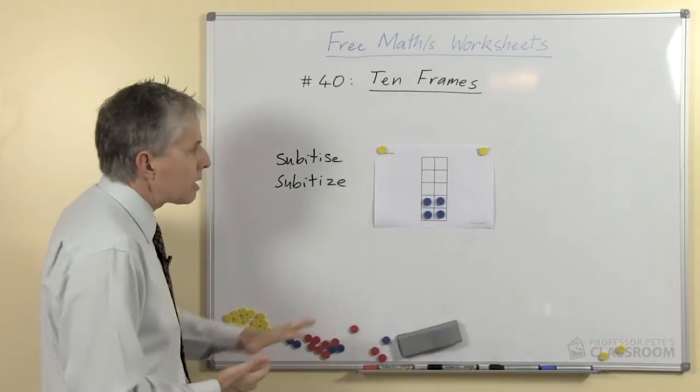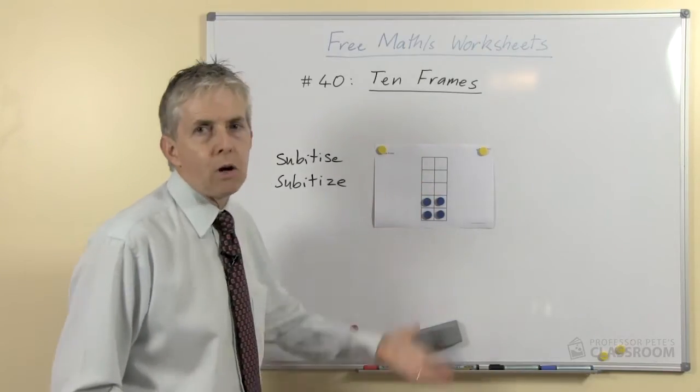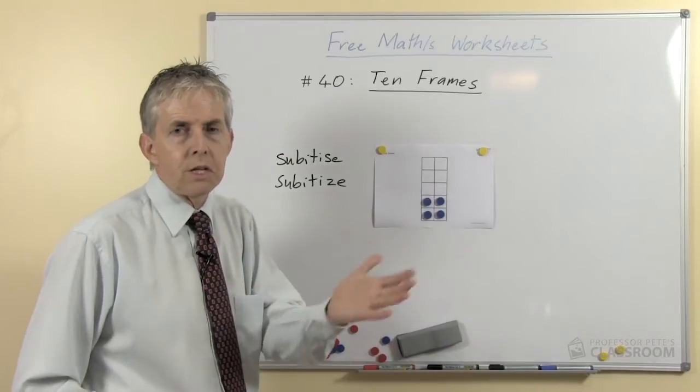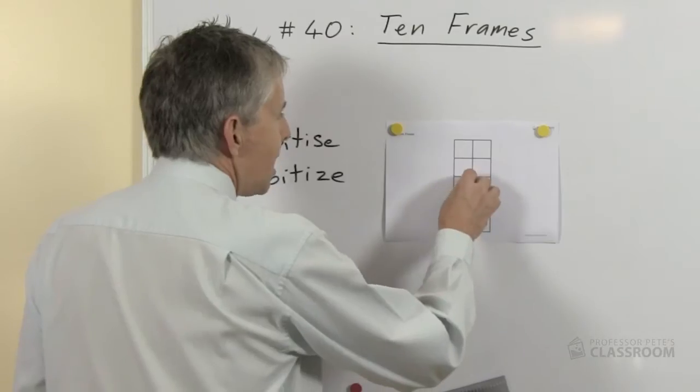Alright, so our students will get used. They can subitize small numbers anyway, but we want to stretch it beyond the small numbers because subitizing usually goes to about four or five, but we can carry that much further.